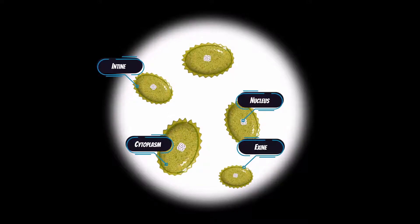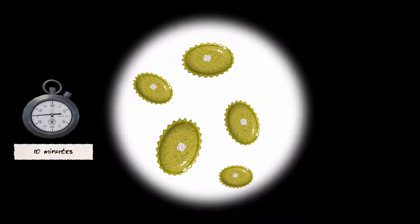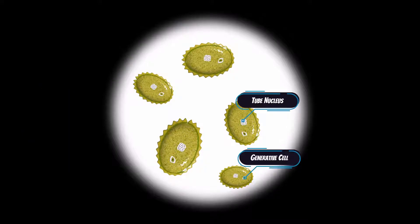Observations: The pollen grain is uninucleate, that is one nucleus in the beginning. At the time of liberation, it becomes two cell with a small generative cell and a vegetative cell.